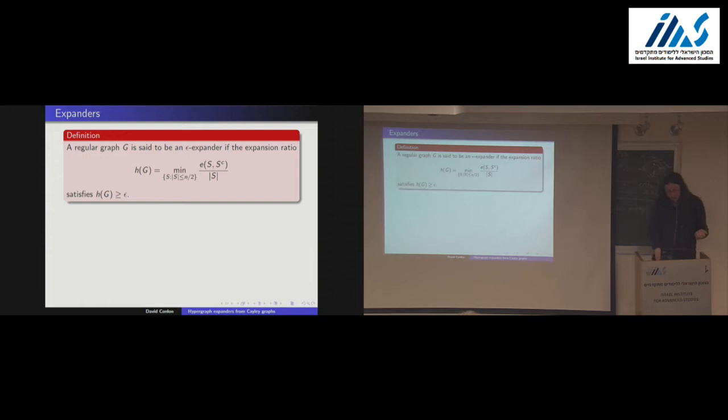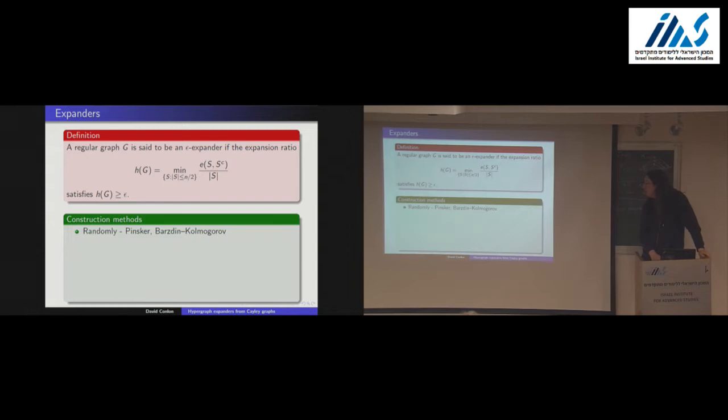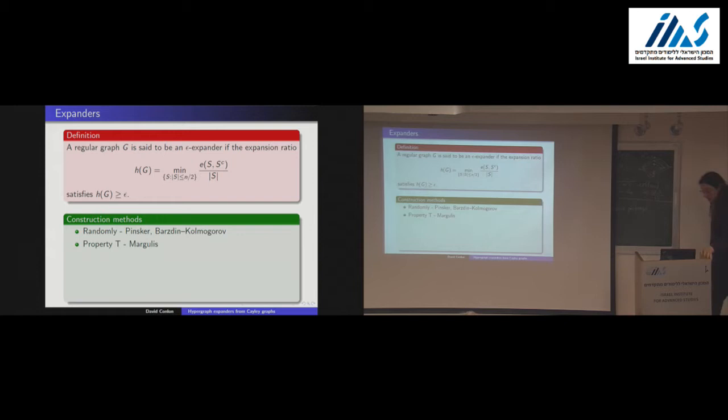There's been a lot of work on trying to construct expander graphs in lots of interesting different ways. The classical way is to do it randomly — just take a random regular graph, and this gives you an expander graph. Work on that goes back to the early 70s, usually attributed to Pinsker, though recently people have noted that Bargden and Kolmogorov also had work in this direction. The first explicit construction of expander graphs was due to Margulis, who used representation theory.